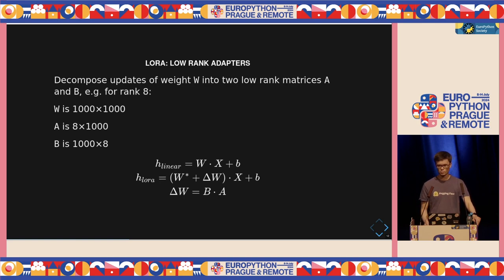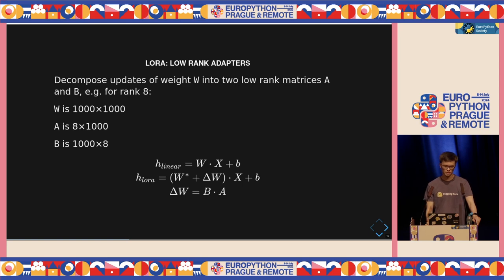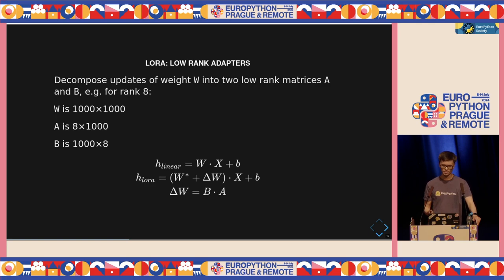Let's assume we have a linear layer with a weight matrix W. This weight W is often quite big — for our example, let's say it has size 1,000 × 1,000. In normal fine-tuning, we would update those 1 million weights. But if we use LoRA, we apply a LoRA adapter: instead of updating W, we update two smaller matrices A and B, which have a low rank — for instance, rank 8. So matrix A would be 8 × 1,000 and matrix B would be 1,000 × 8. Adding those up, it's a much lower number of parameters than 1,000 × 1,000.